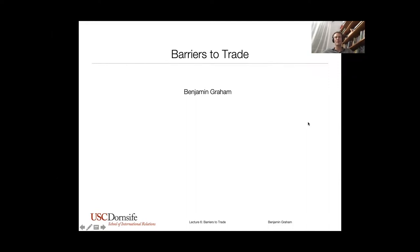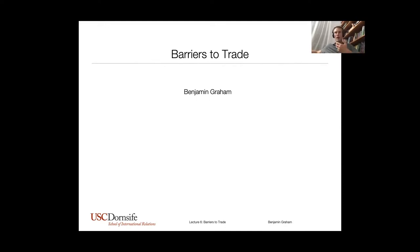Hi, I'm Ben Graham. Welcome to International Political Economy, and this is our lecture on barriers to trade. At this point in the course, we've covered supply and demand, and we've been talking quite a bit about comparative advantage and how trade creates wealth. But we've also started to talk about how free trade creates both winners and losers. And when countries want to limit free trade, when they want to restrict or shape markets, how do they go about doing that? So this is our lecture on barriers to trade.